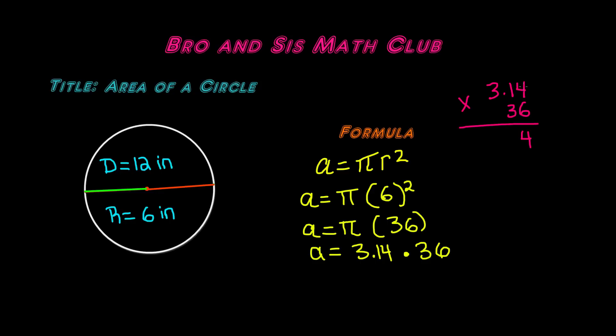6 times 4 is 24, carry the 2, get 8. 6 times 3 is 18. Add a 0. 4 times 3 is 12, carry the 1. 3 times 1 is 3, plus the 1 is 4. 3 times 3 is 9. Add them together, and we get carry the 1, 13, 11. And we have to add a decimal point two places to the left. And our final product is 113.04. That means the area of this circle is equal to 113.04 inches squared.